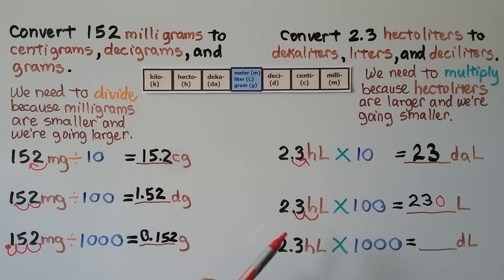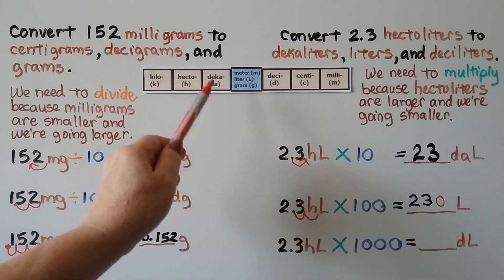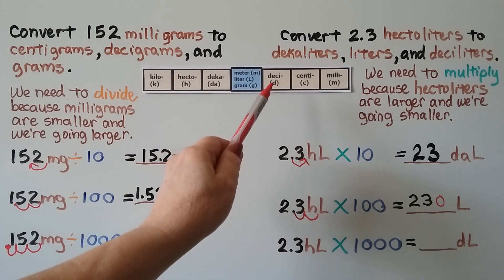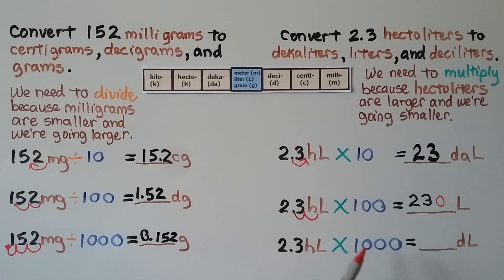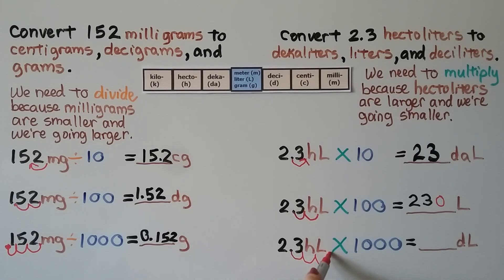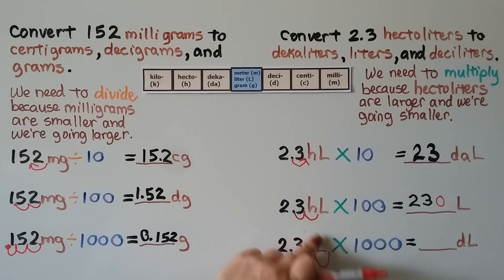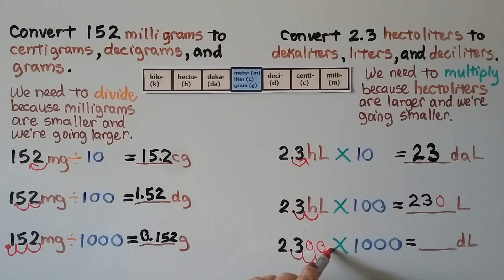To convert to deciliters, we go 1, 2, 3 powers of 10, which is 1,000 (10 × 10 × 10). We move the decimal point 3 hops to the right: 1, 2, 3. We add zeros as placeholders, giving us 2,300 deciliters.